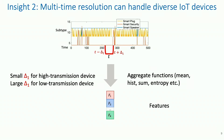The problem lies in how you decide this aggregation window. If you choose a very small aggregation window, you will be extremely prone to noise, whereas picking a large aggregation window will dilute minor variation. This is also referred to as the bias-variance trade-off in the machine learning literature. What we ideally want is a small delta for a high-transmission device such as a camera, and a large delta for a low-transmission device such as a smart plug.